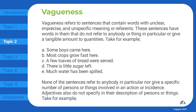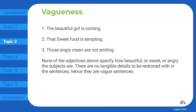None of those sentences refer to anybody in particular, nor give a specific number of persons or things involved in an action or incident. Adjectives also do not specify in their description of persons or things. For example: 'The beautiful girl is coming.' 'That sweet food is tempting.' 'Those angry men are not smiling.' None of the adjectives above specify how beautiful, sweet, or angry the subjects are. There are no tangible details to be reckoned with in the sentences, hence they are vague sentences.